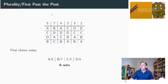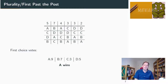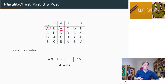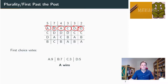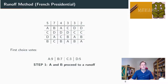Under first-past-the-post, we just add up the first-choice votes. A has five plus four first-choice votes, giving nine. B has seven, C has three, and D has five. So A just wins, and that's it.